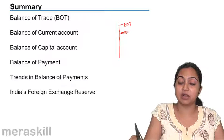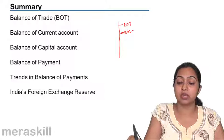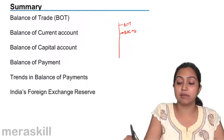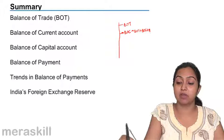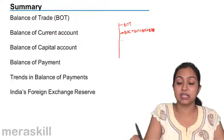then balance of current account, which had balance of trade, balance of services and balance of unilateral transfers in it,